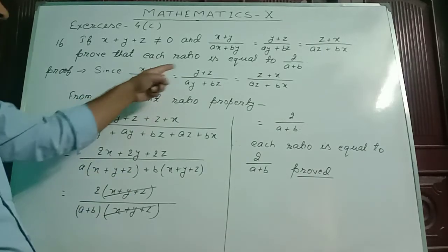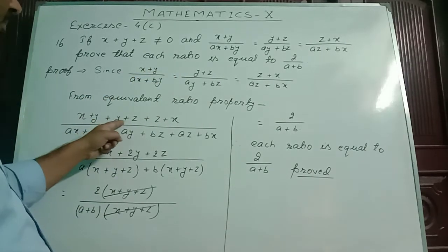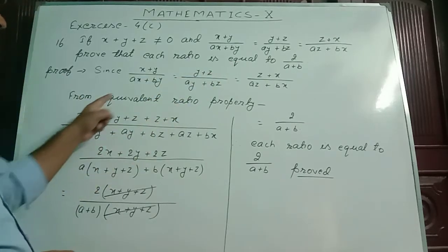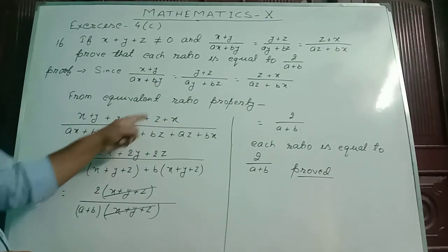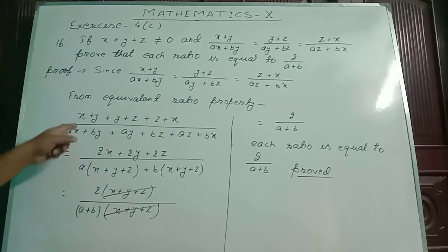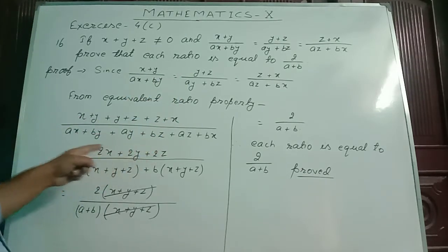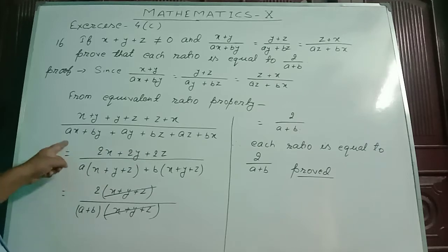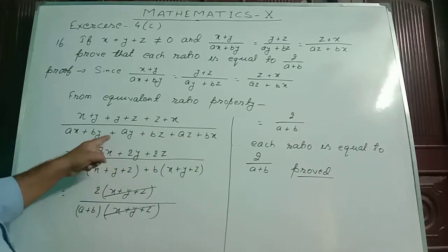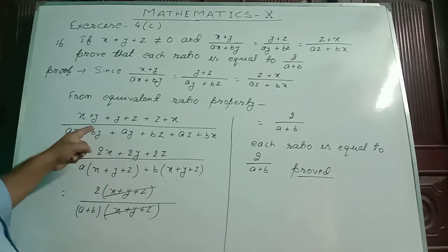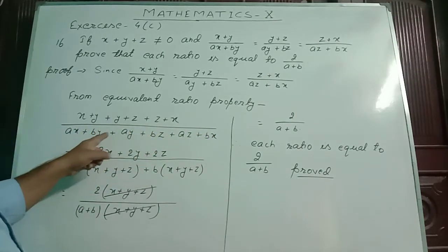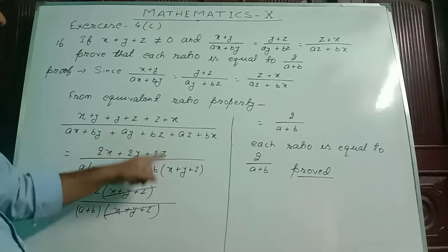For that, I have added all these numerators. I got x plus y plus y plus z plus z plus x, and denominators ax plus by plus ay plus bz plus az plus bx. Here, 2x plus 2y plus 2z; taking 2 common, then x plus y plus z inside the bracket. Next, plus b common, then x plus y plus z inside the bracket.